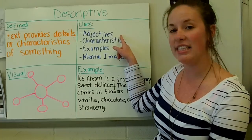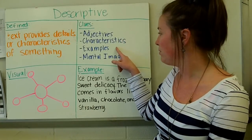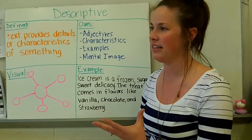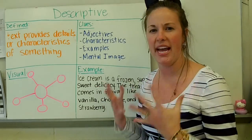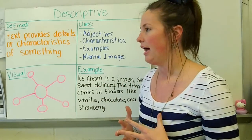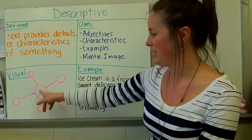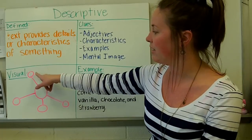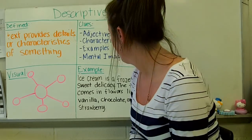Clues that you can look for include adjectives, characteristics, examples, and a mental image. So when the author is telling this descriptive structure to you, your brain should almost be painting a picture. And we'll get to it in just a second. A visual you could use is just a plain bubble map where you would put the topic in the middle and then you could put characteristics or adjectives around it that describe it.